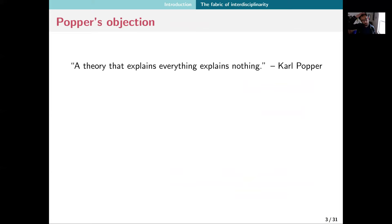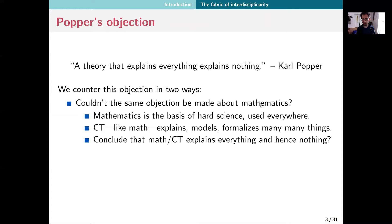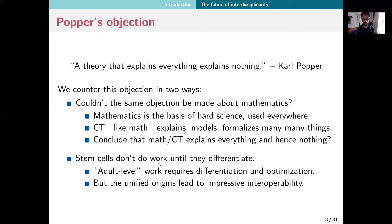Now, maybe Karl Popper would say a theory that explains everything explains nothing. How would we counter that? We'd counter it in two ways. First of all, you couldn't make the same objection about mathematics. If math is the basis of hard science and used everywhere, does that mean that since it explains so much, it explains nothing? So category theory, just like math, explains and formalizes many, many things, and that doesn't mean it doesn't explain anything. Karl Popper's idea has some sense to it too, so how do we resolve this paradox?